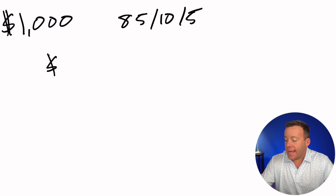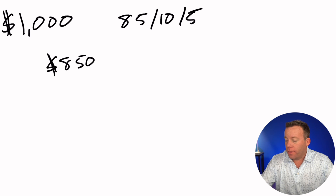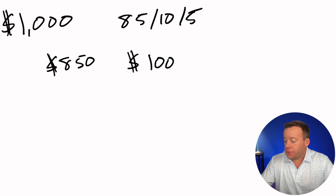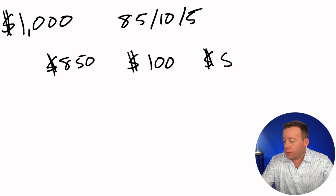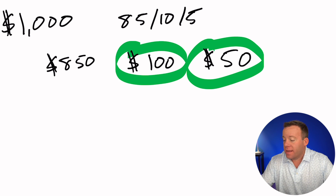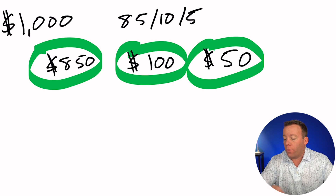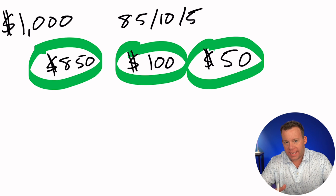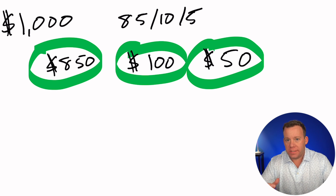So what that looks like: we're going to take $850 of our total budget, $100 of our total budget, and then the 5% — $50 of our total budget. We're going to put them into different campaign types that should all work if not from day one then within a few days when they start to kick in. And this is where that $1,000 budget is going to go.